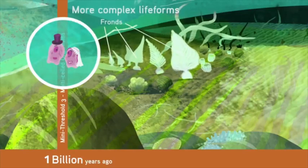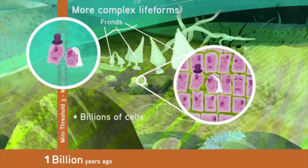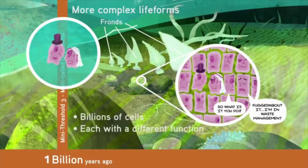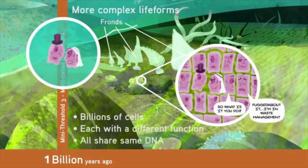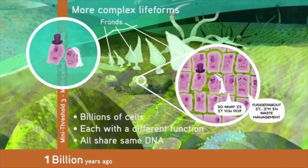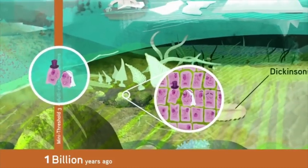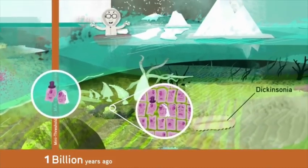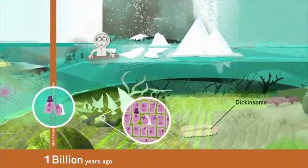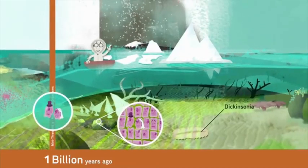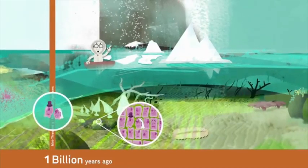These organisms could contain billions of cells, each with a different function, but all sharing the same DNA. So they worked together. With networks of specialized cells in cooperation, multicellular organisms could respond to changes in the environment in entirely new ways, further developing a key survival trait of life that we call homeostasis.